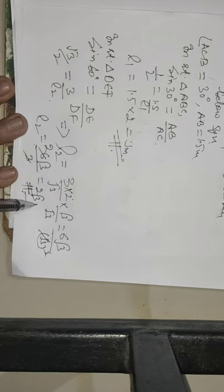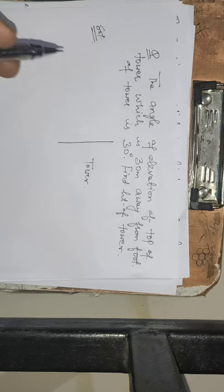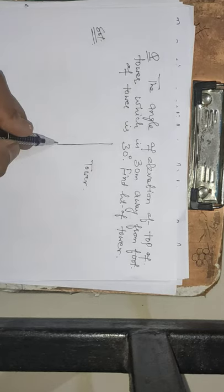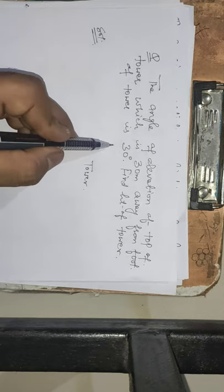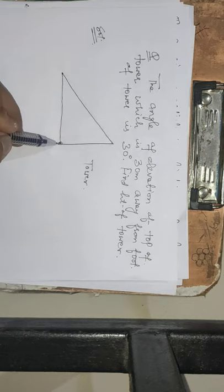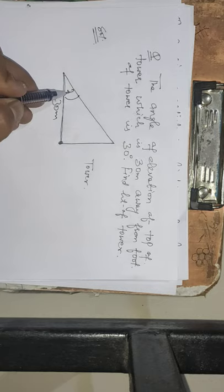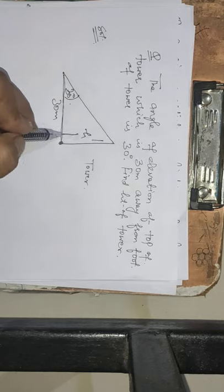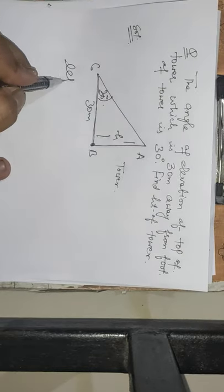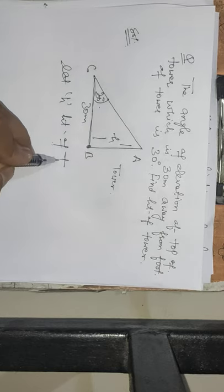So the slide length is 3 meters and 2 root 3 meters. Next question: The angle of elevation from a point 30 meters away from the foot of the tower is 30 degrees. Find the height of the tower.